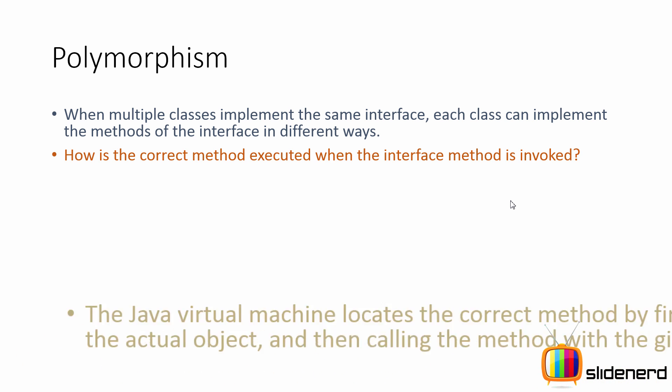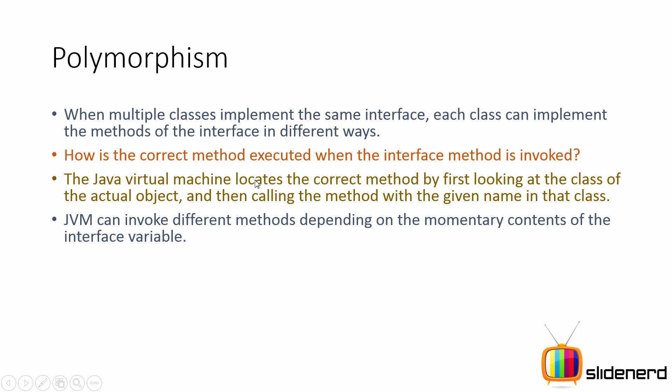The Java Virtual Machine is going to locate the correct method first by looking at the class of the actual object and then calling the method with the given name in the class. Now it says class of the actual object, which means if you call display and if you pass a rectangle object, then the Java Virtual Machine is going to call getPerimeter on that rectangle object.